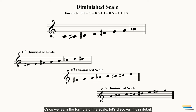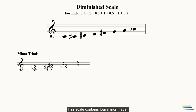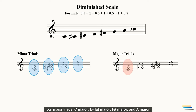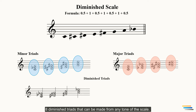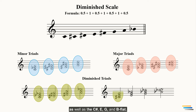Once we learn the formula of the scale, let's discover this in detail. This scale contains four minor triads: C minor, D sharp minor, F sharp minor, and A minor. Four major triads: C major, E flat major, F sharp major, and A major. And eight diminished triads that can be made from any tone of the scale — C, D sharp, F sharp, A, as well as C sharp, E, G, and B flat.